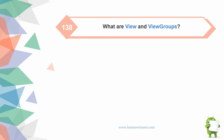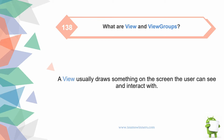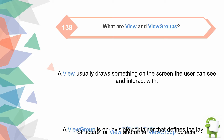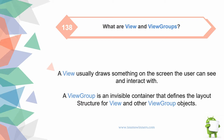What are view and viewgroup? A view usually draws something on the screen the user can see and interact with. A viewgroup is a non-visible container that defines the layout structure for view and other viewgroup objects.